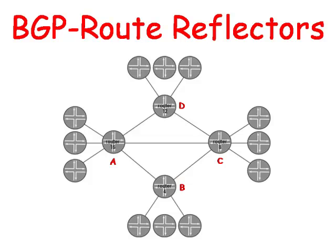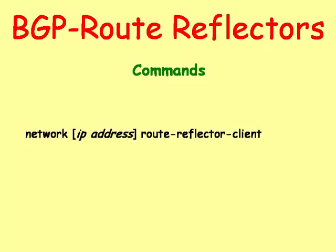In the illustration, routers A, B, C, and D each have clients, and they are connected to one another, creating a logical full mesh. The neighbor Route Reflector Client command is an IBGP feature that allows you to build fully scalable full meshes for scalable IBGP networks.